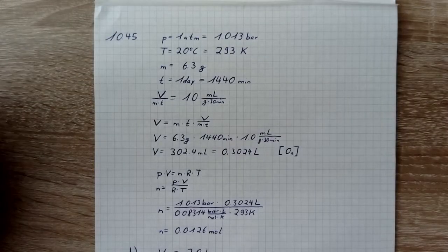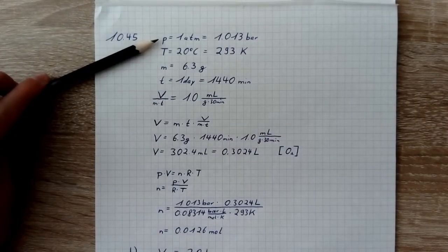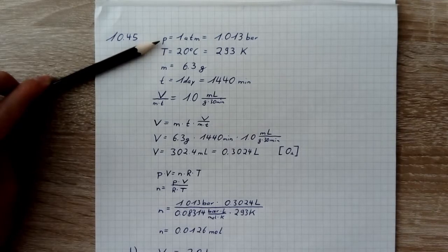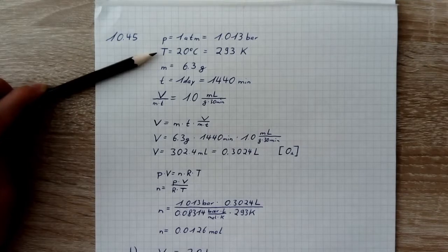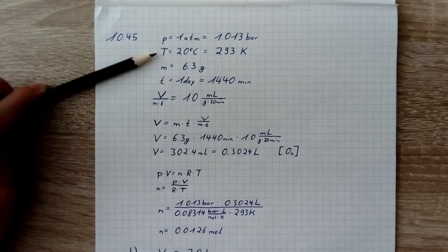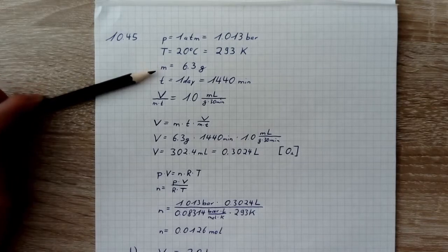So let's start with A. We have a pressure of 1 atm which is 1.013 bar. We have a temperature of 20 degrees Celsius which is 293 Kelvin. We have a mass of 6.3 grams.